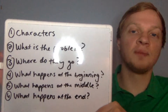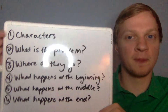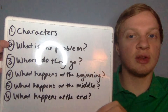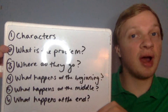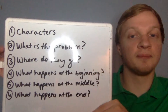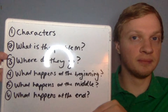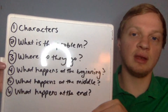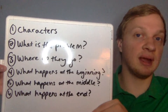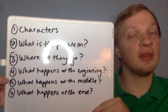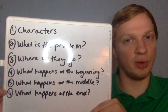The first thing that you need to have are characters. Second, you want to look at what is the problem in the story. Then where does the story take place? Then what happens at the beginning of the story, what happens at the middle of the story, and what happens at the end of the story.